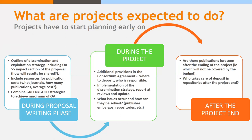During the project, it's quite important to have someone in the consortium responsible for managing all issues regarding open access compliance. Usually there is a partner responsible for dissemination — this can be the same partner responsible for ensuring that all published results of the project are available in repositories and comply with European Commission requirements. Be well informed about publisher embargoes and self-archiving policies to avoid problems when reporting to the European Commission.